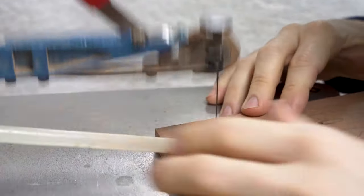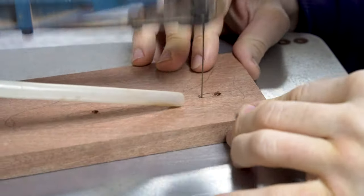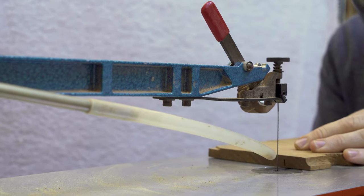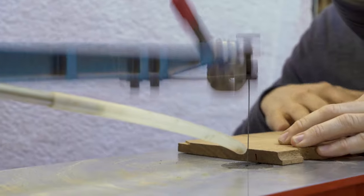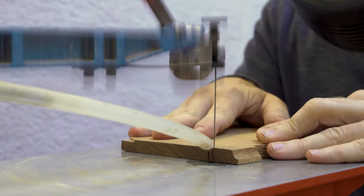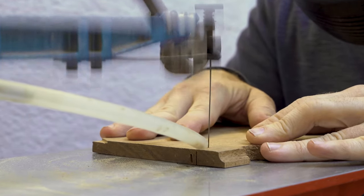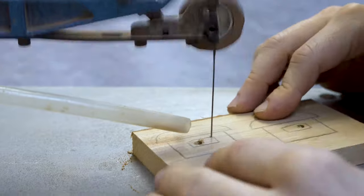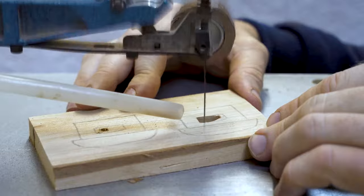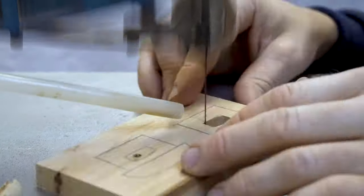Now the quick release clamp, as it says, makes this process slightly quicker. Our scroll saw, our Hegner multi-cut 2S, is in daily use. It's a really important part of what we do here at our family workshop. So any saving in time is absolutely vital and that is where the quick release clamp does a fantastic job.